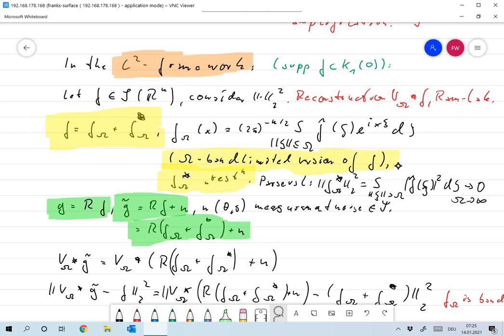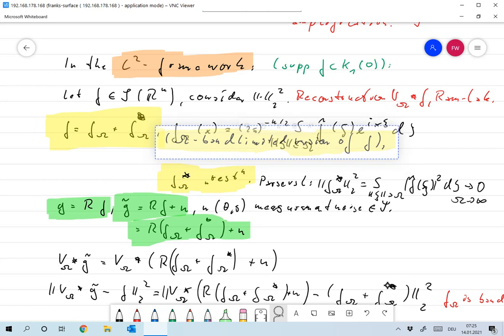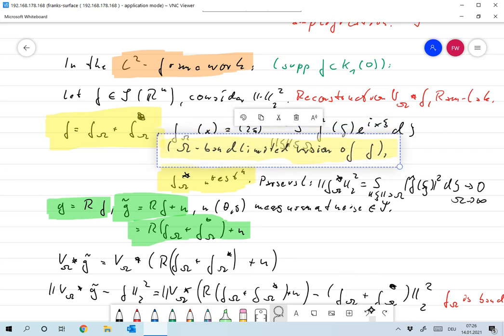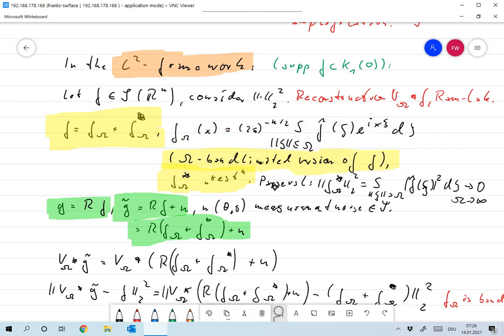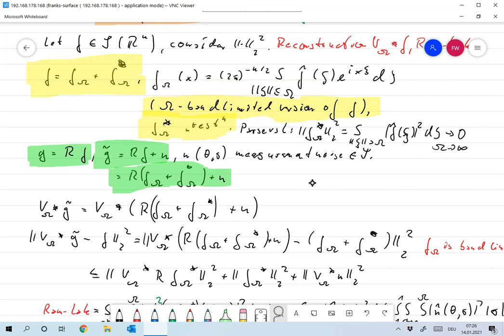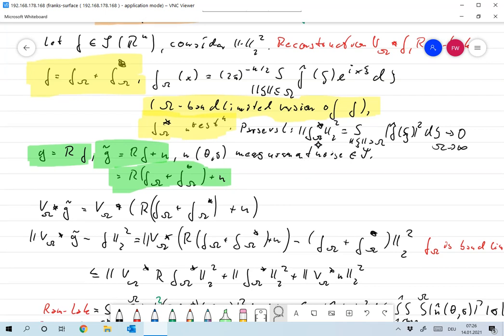f_omega is omega band limited and f_omega star is the rest. These are the frequencies beyond omega.